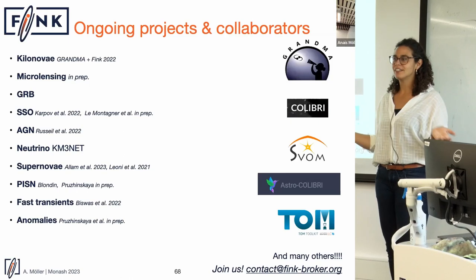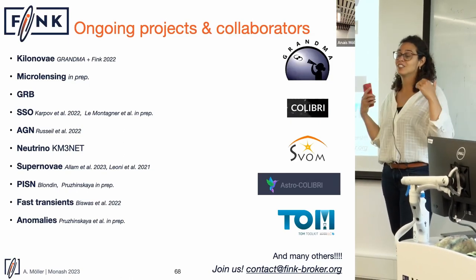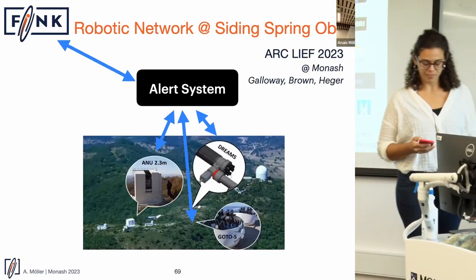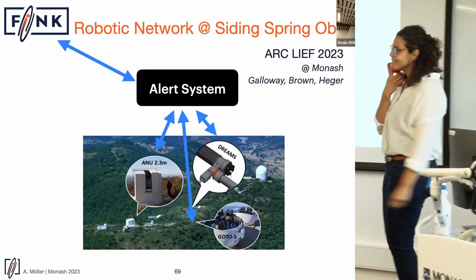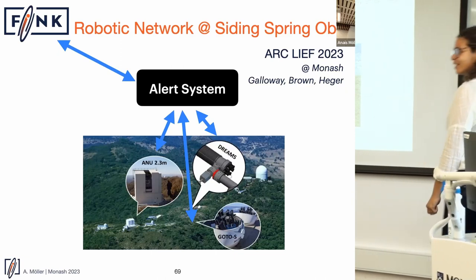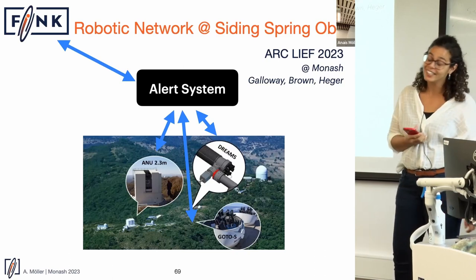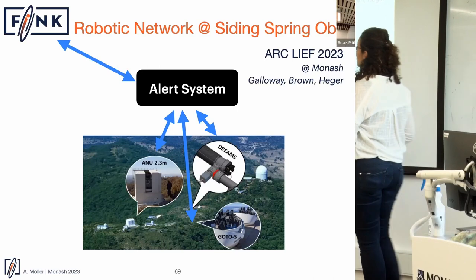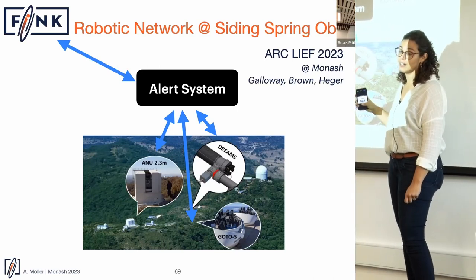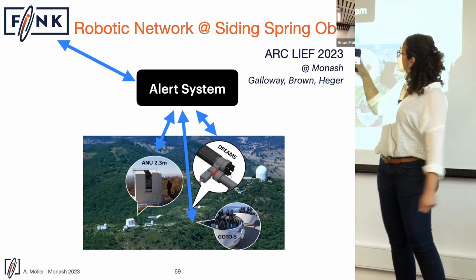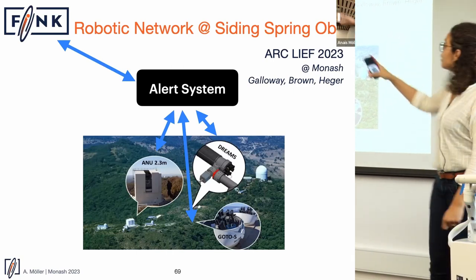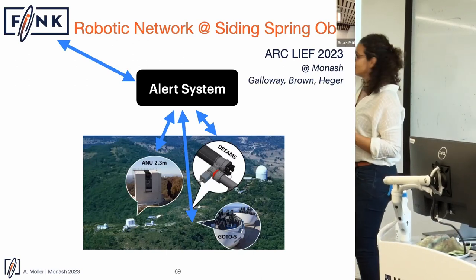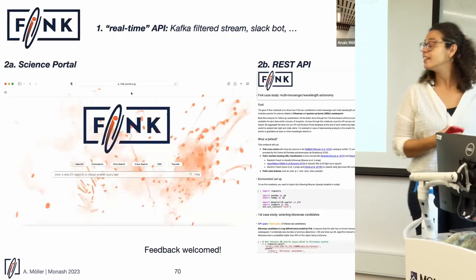This is not exhaustive — we are very horizontal as a collaboration. If you want to join any of these science cases, it's easy: you agree to a code of conduct and you're part of Fink. We also have a new project with Duncan and others: a robotic network at Siding Spring Observatory, triggering follow-up automatically with the ANU 2.3m, DREAMS infrared telescope, and GoToSouth photometric telescope, all controlled by an alert system with Fink plugged in.